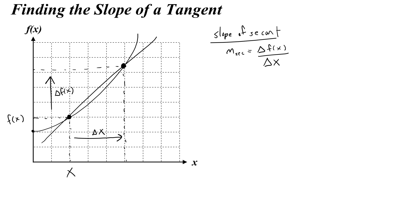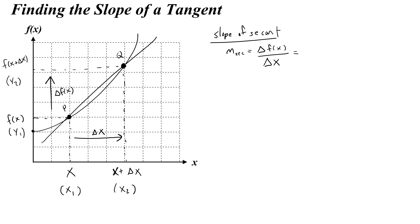We can define the second value — point Q. Instead of saying x1 and x2, we call it x plus delta x, which is true: it's your initial x value plus the change in x. Then if our original function is our first y value, f of x, we call the second point f of x plus delta x — whatever the function equals at x plus delta x, that is your y value at that point.